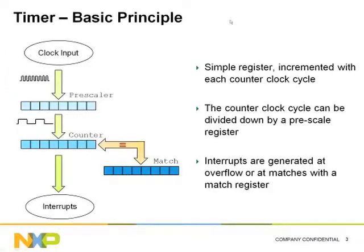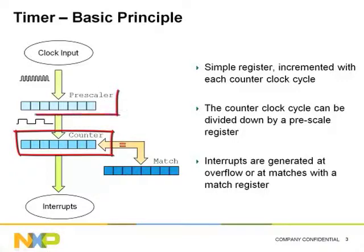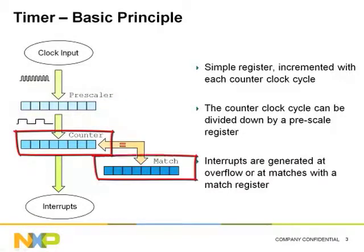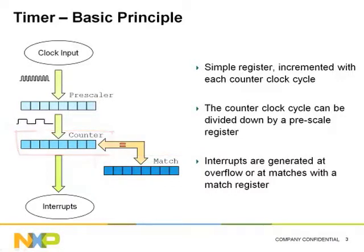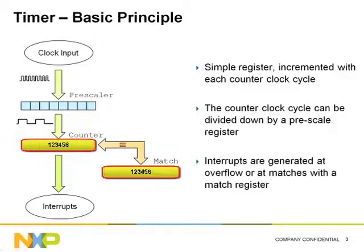This slide recalls the basic features of a timer. There is a register which gets incremented at each counter clock cycle. The counter clock cycle can be divided down by a pre-scale register. There is an additional register called a match register, which is used to compare the value of the counter. When those two values are equal, interrupts can be generated.